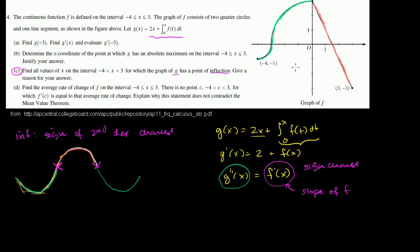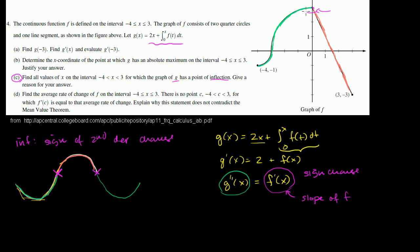So this is interesting, because even though f is actually not differentiable at that point right over there — you can see the slope goes pretty close to 0 then just jumps to negative 3, so you have a discontinuity of the derivative — we do have a sign change. We go from having a positive slope to having a negative slope, so we experience a sign change at x is equal to 0. This is a sign change in the second derivative of g, which tells us that when x is equal to 0, the graph of g has a point of inflection.